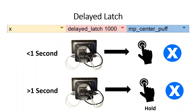Delayed latch acts like a combination between the normal and toggle output functions. If I blow into a sip and puff for less than a preset amount of time, it acts like a normal button. However, if I blow into it for longer than a preset amount of time, it will toggle on that control and hold it down. For example, if set to delayed latch after one second, blowing for less than one second taps normally, but blowing for longer latches and toggles the control on.